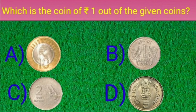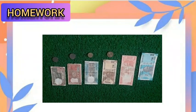Let's see the options. Option A: ten rupees coin. Option B: one rupee coin. Option C: two rupees coin. Option D: five rupees coin. Option B is the one rupee coin, so the right answer is option B.